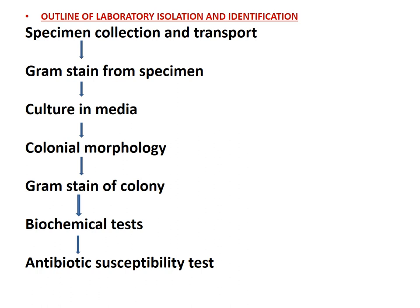The outline begins with specimen collection and transport, including transport media if required, followed by gram stain of the specimen, then culture on appropriate media under specified conditions. After incubation, we describe colonial morphology, then gram stain the pure colonies. Based on this gram stain and colonial morphology, we carry out biochemical tests to identify the isolates. Finally, and very importantly for patient management, we carry out antibiotic susceptibility testing to determine which antimicrobial agents can be prescribed.